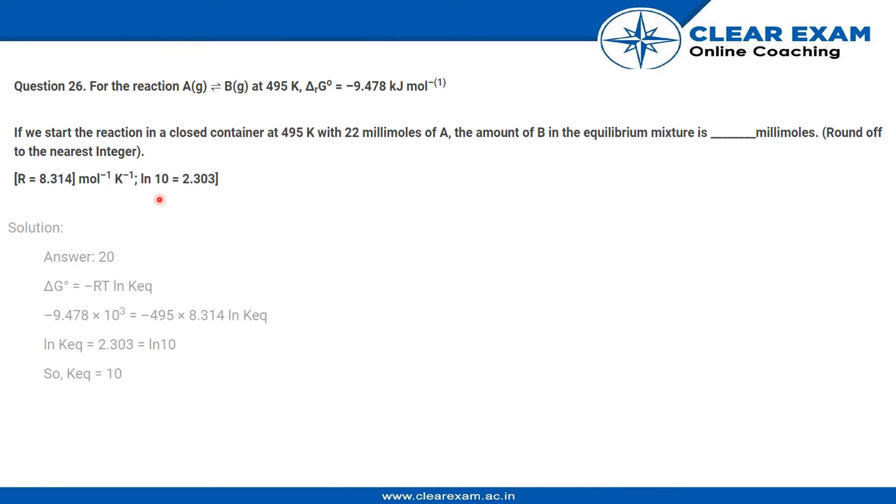We have been given delta G0. From here we can find the K equilibrium and then from K equilibrium we can find the number of millimoles of A. So let's approach the question.